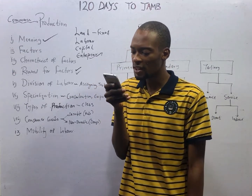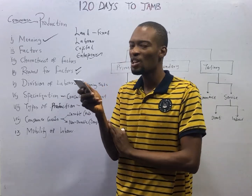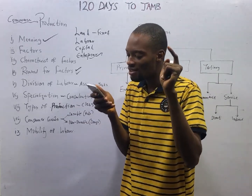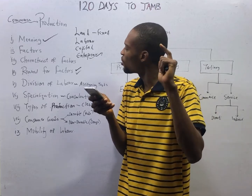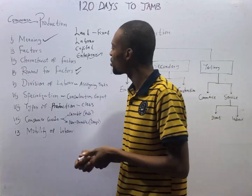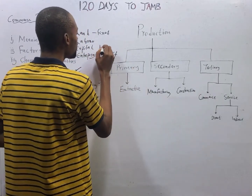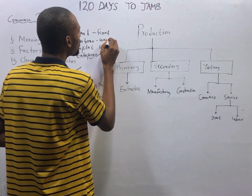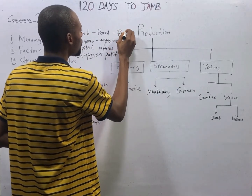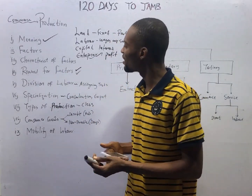Entrepreneurship is the factor that coordinates the other factors of production. The entrepreneur owns the enterprise and coordinates the other factors. It is the most active factor of production and supplies the necessary capital for business. The entrepreneur is the risk-bearer and decision-maker. The reward for entrepreneurship is profit. To summarize: land earns rent, labor earns wages and salary, capital earns interest, and entrepreneurship earns profit.